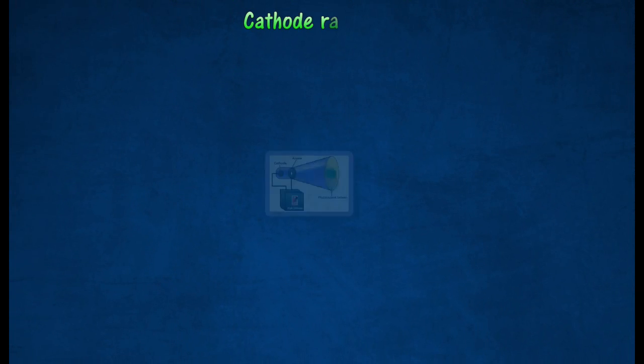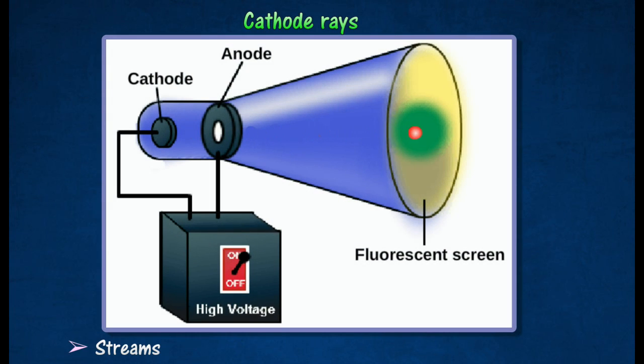Cathode Rays. Cathode rays consist of streams of high-velocity electrons moving in a straight line.